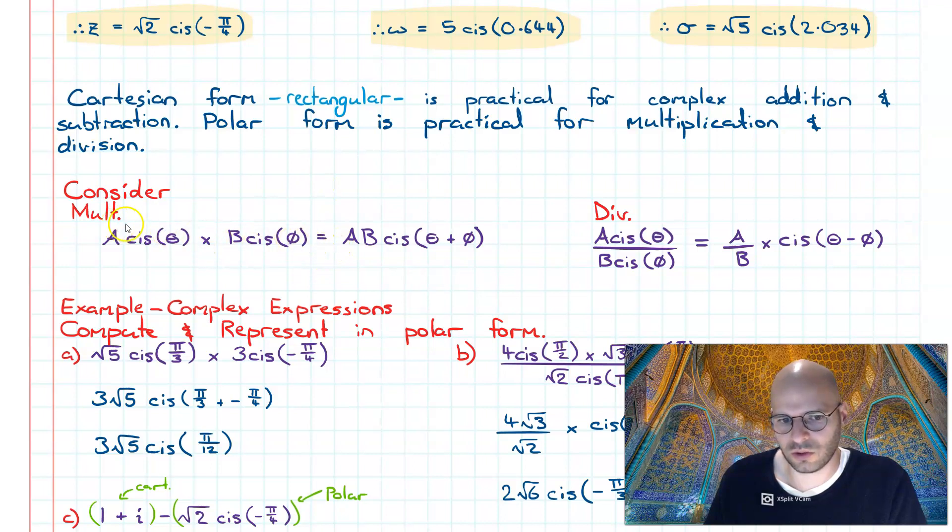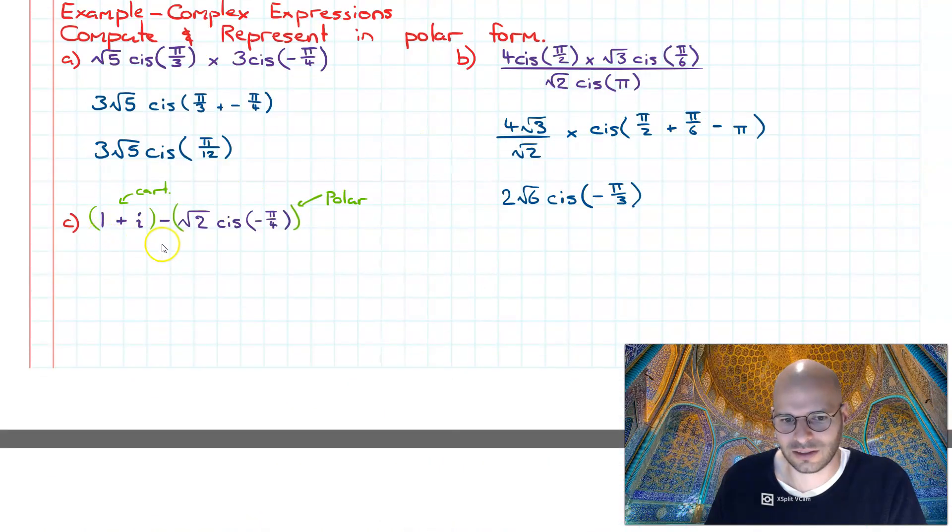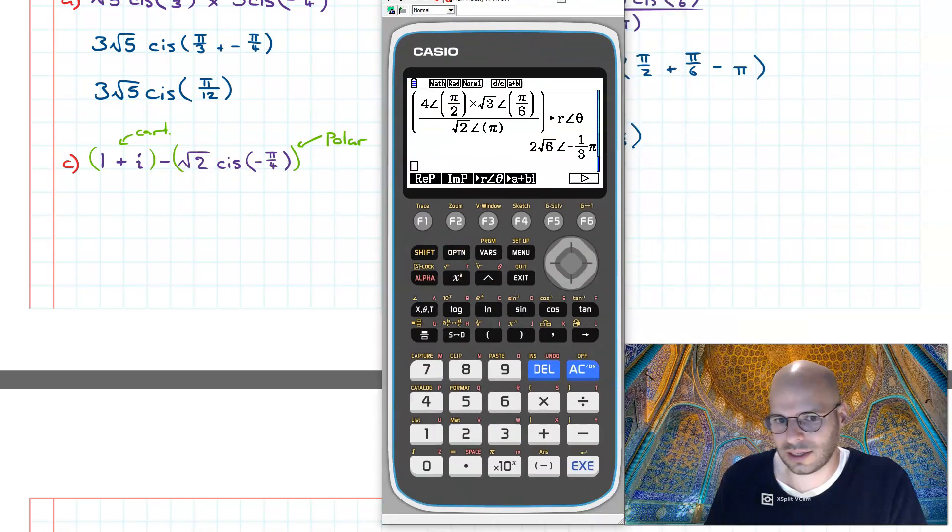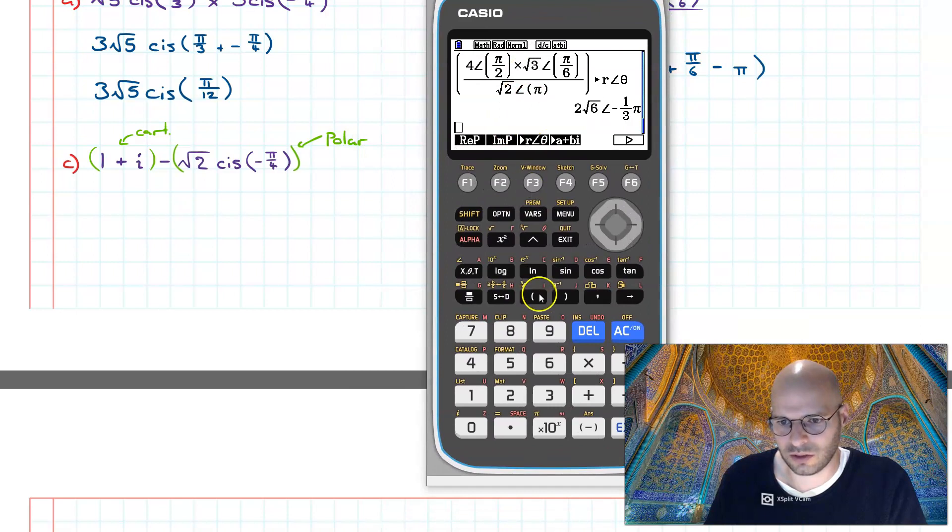However, Cartesian form is more practical when we're doing addition and subtraction, because we simply add and subtract the real and the imaginary components. So what we're going to do is we'll use the tech to convert this into Cartesian form.